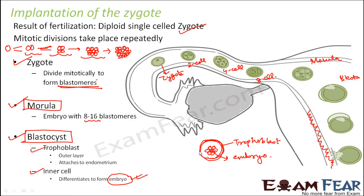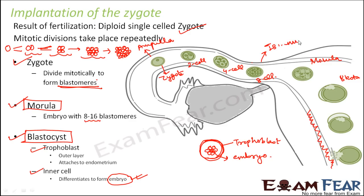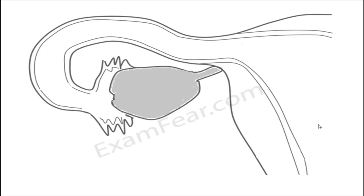The entire movement started from the ampulla region of the fallopian tube, then gradually reached the isthmus. By the time blastomeres were formed it had already reached the isthmus, and by the time the blastocyst formed it had entered the uterus and finally got implanted or attached to the endometrium.